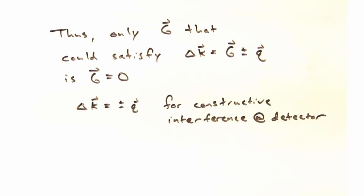which is to say the origin. And so we end up simply with the expression delta k equals plus or minus q for constructive interference at the detector.